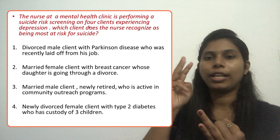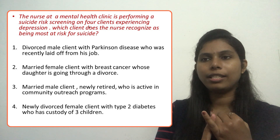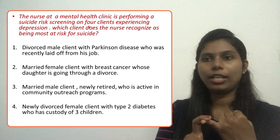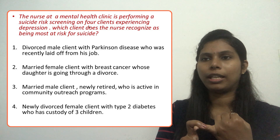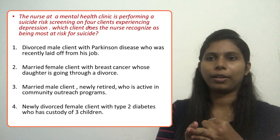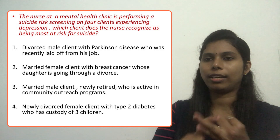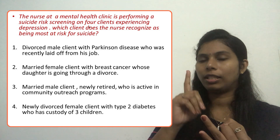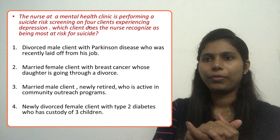Option four also has a positive protective factor: the female client has custody of three children, which is a sign of hope. Moving to option two — the married female client with breast cancer whose daughter is going through a divorce: risk factors are breast cancer (terminal/serious illness), her daughter's divorce (interpersonal stressor), and depression — three risk factors total. So options two and four each have three risk factors, while option three has only two.